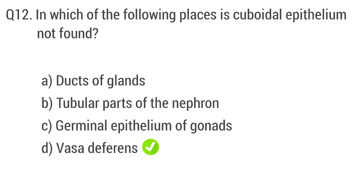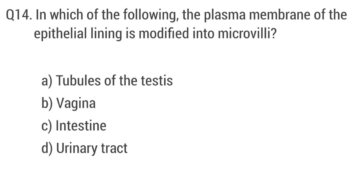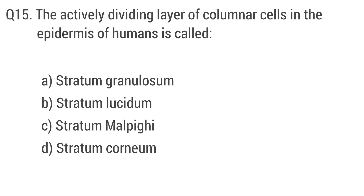Question 12: In which of the following places is squamous epithelium not found? The right answer is option D: posterior surface. Question 13: Which type of tissue forms the inner lining of blood vessels? The right answer is option A: epithelial tissue. Question 14: In which of the following is the plasma membrane of the epithelial lining modified into microvilli? The right answer is option C: intestine.